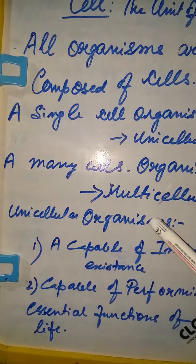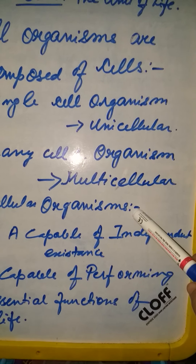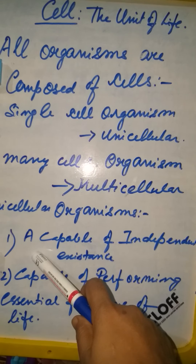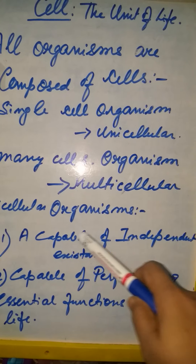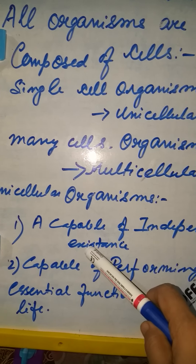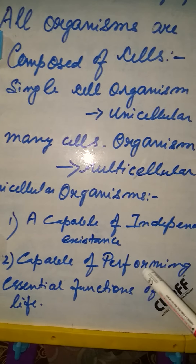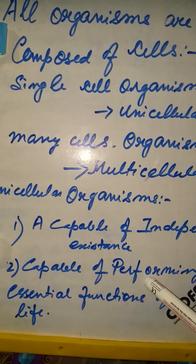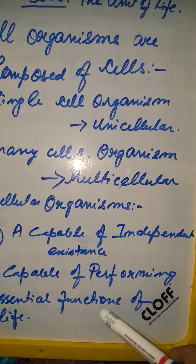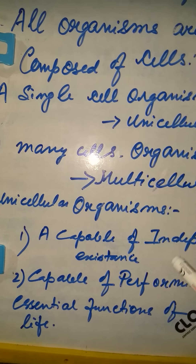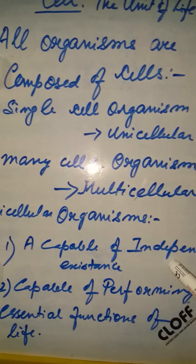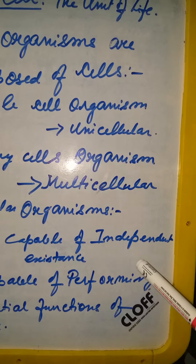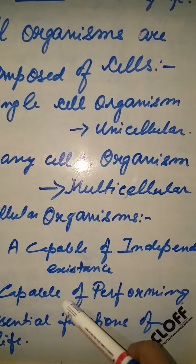Unicellular organisms — for example, a bacterial cell, an amoeba, or a paramecium — these cells are capable of independent existence. They can exist independently without any other supporting cells, and they are capable of performing essential functions of life: nutrition, respiration, energy production, reproduction, and response to stimuli. This is known as cellular independency.